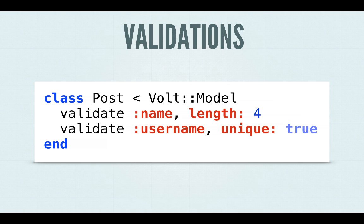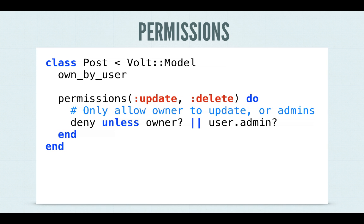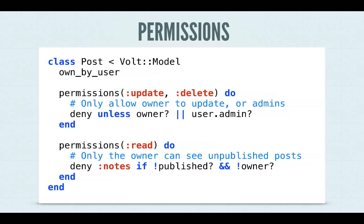Volt models provide validations and permissions. The permissions are based around the CRUD operations, so you can say who can do what when you're creating, reading, updating, or deleting. You can also be granular about which fields they can access specifically — you can either allow or deny fields. It's a pretty simple API to control all your permissions needs.